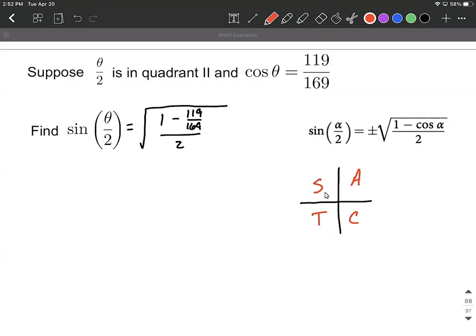We are told that this is in quadrant 2, so that means sine is positive in quadrant 2. I'm going to make sure we understand that's going to be positive. If this happened to be in quadrant 3 or 4, we would use a negative out in front.